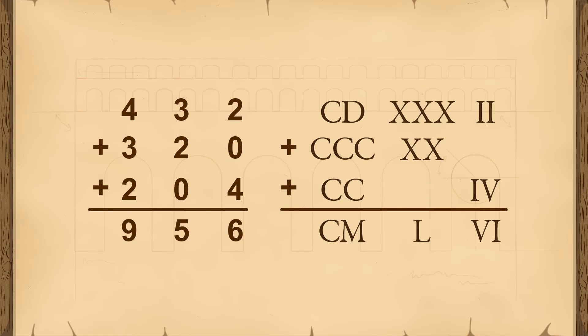An even more important difference is that our modern number system uses the same symbol to represent different values depending on its position in the number. For instance, in this problem, the number 2 represents 2, 20, and 200 depending upon which column the 2 is in.